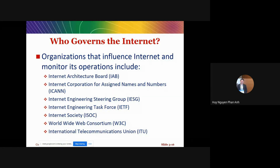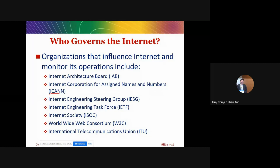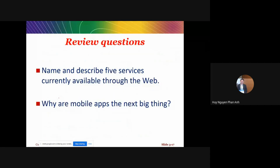The question of who governs the internet — organizations such as ICANN and W3C observe and govern internet operations. For review, you should be able to name and describe five services currently available through the web, and answer why mobile apps are the next big thing.